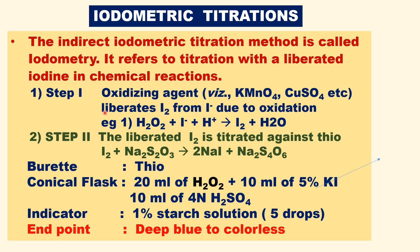Iodometric titration takes place in two steps. For example, an oxidizing agent such as KMnO4, copper sulfate, or hydrogen peroxide reacts with KI in acid medium to liberate iodine. In the second step, the liberated iodine is titrated against thiosode. In iodimetric, it involves only one step. Here, in the first step, iodine is liberated from KI using oxidizing agents; in the second step, the liberated iodine is titrated against thiosode.